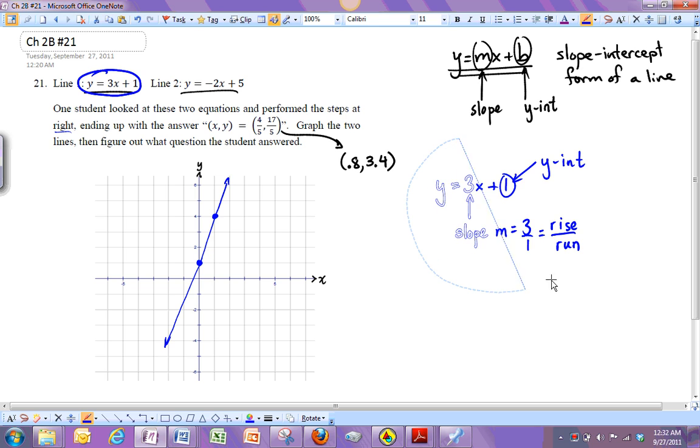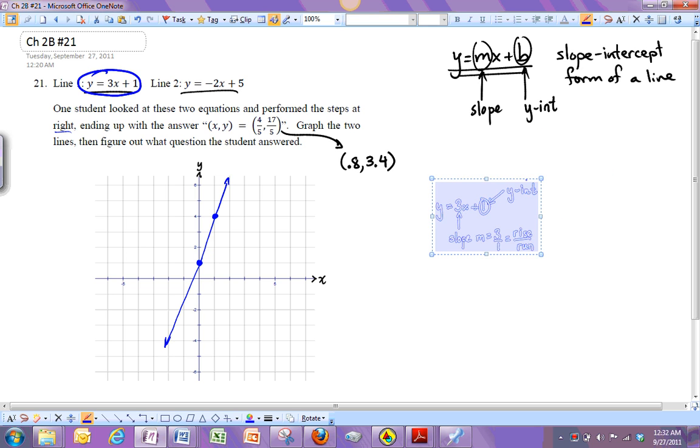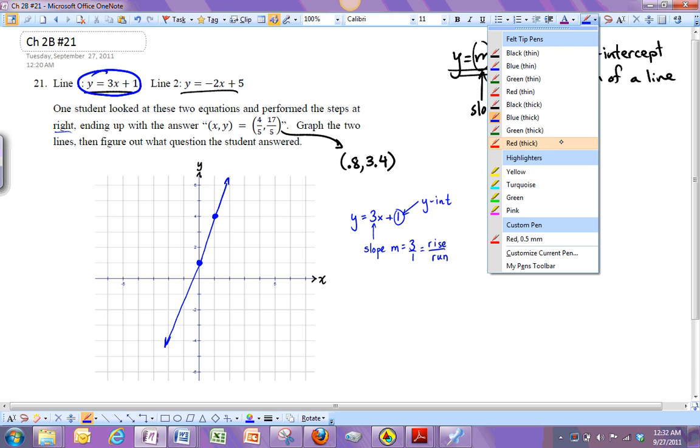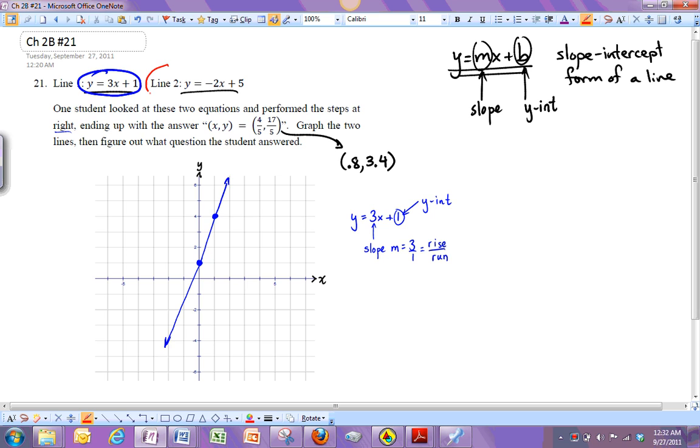Okay, let me pick a different color and we'll graph the other line. So y = -2x + 5. In this one, my slope is -2, which I'm going to write as -2/1. So again, we'll think of this as rise over run. So a rise of -2, which is a drop of 2, and a run of 1. And then 5 here is my new y-intercept.